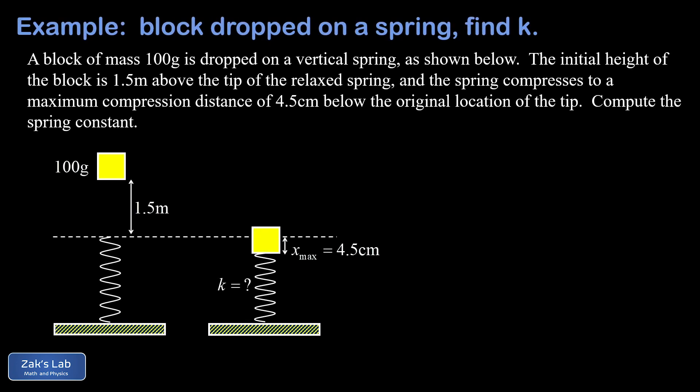In this problem, we're dropping a block onto a vertically oriented spring in order to find the spring constant. We're given this block of mass 100 grams and it's released from rest at a height of one and a half meters above the tip of the relaxed spring.